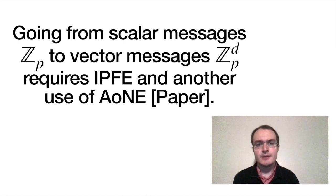Finally, we simplified things a bit here by having simple scalars as messages, but we can actually have vectors as messages. That actually complicates things a bit as far as repeated queries are concerned. This can be addressed by combining a layer of single input inner product functional encryption with another layer of AONE on the functional keys. Again, I'll refer you to the paper for details.